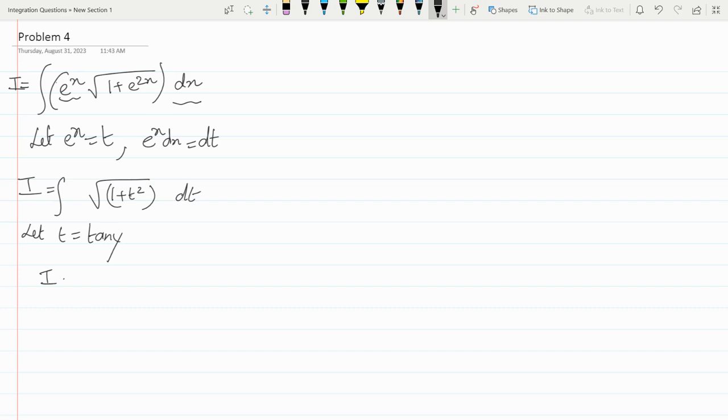So I will have integration of 1 plus tan square y. And I just need to substitute dt with dy. So dt will be equals to sec square y dy.